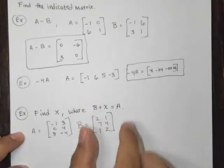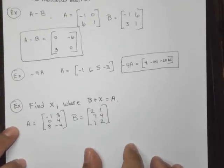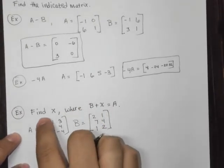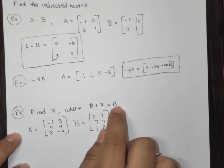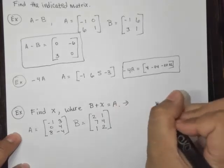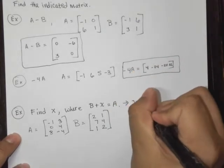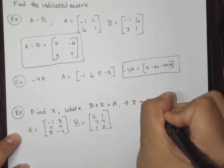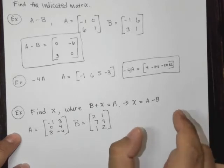Now in this one, this is kind of like a basic matrix equation. We have find X where B plus X equals A. So let's see, if I'm solving for X, if this was just a general equation, I would say X equals A minus B.